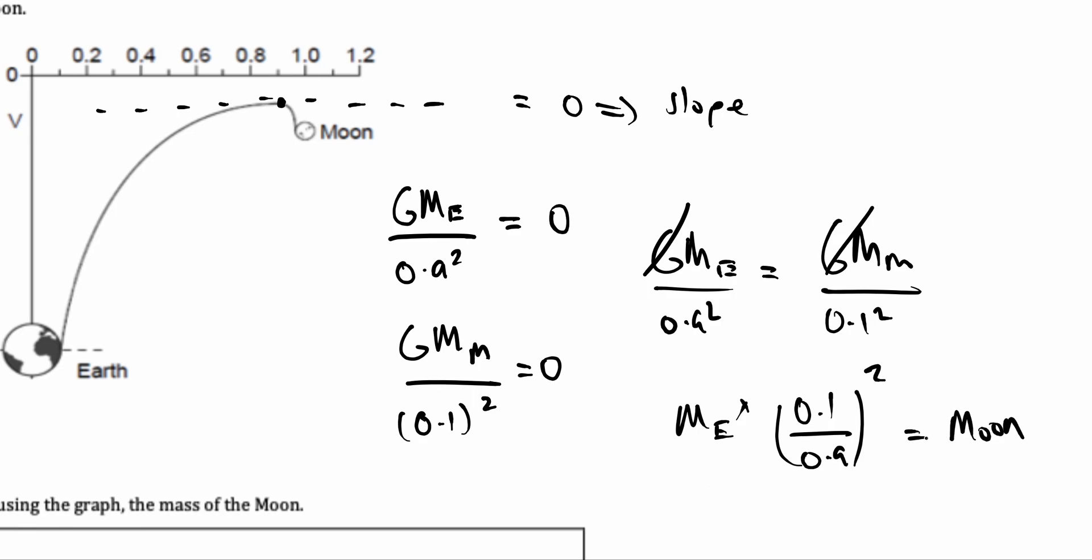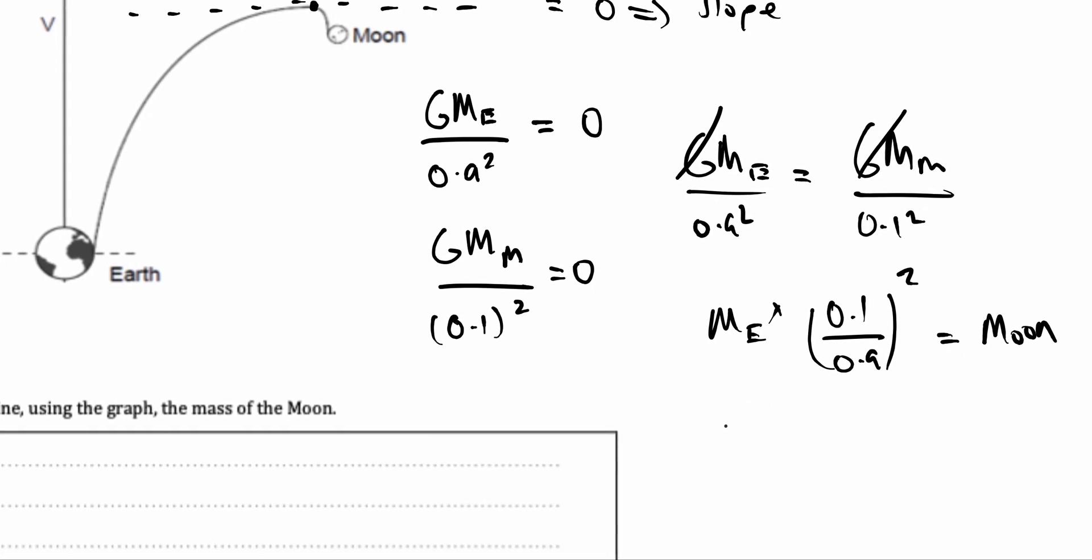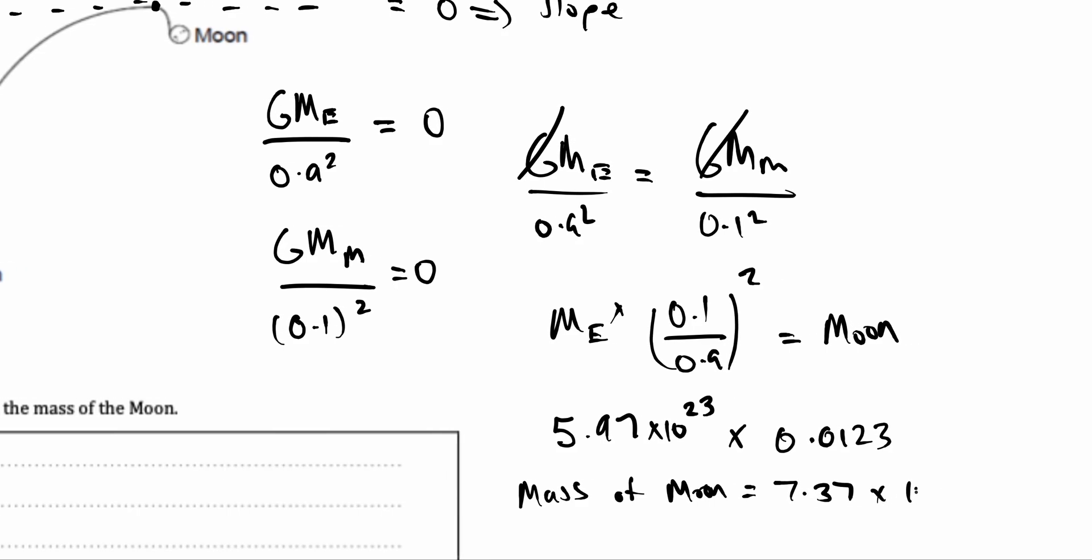So, let's put this on our calculator. We already know the mass of the Earth from the question it was given, 5.97 into 10 to the power of 23. This times, let's put this on our calculator, 0.1 over 0.9 whole square is equal to 0.0123. So if we multiply our two things together, we get the mass of the Moon is equal to 7.37 times 10 to the power of 22 kilograms.